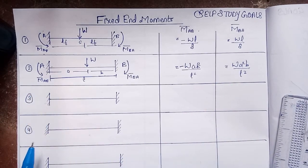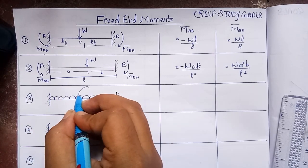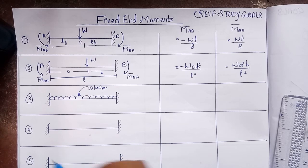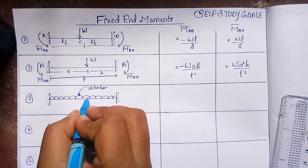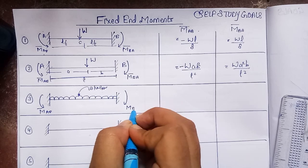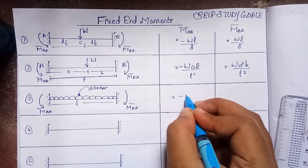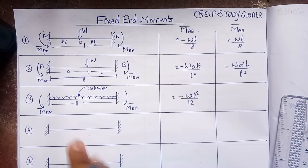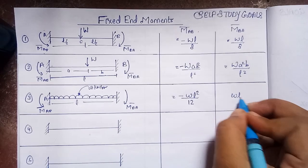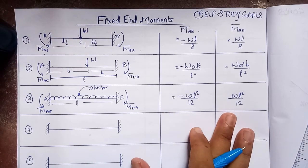The third case is when a uniformly distributed load (UDL) of intensity w kN/m is applied over the entire span of a fixed beam. Due to this UDL, fixed end moments develop at both ends. The value is: M-bar_AB = −wL²/12 (anti-clockwise at A, hence negative) and M-bar_BA = +wL²/12 (clockwise at B, hence positive).